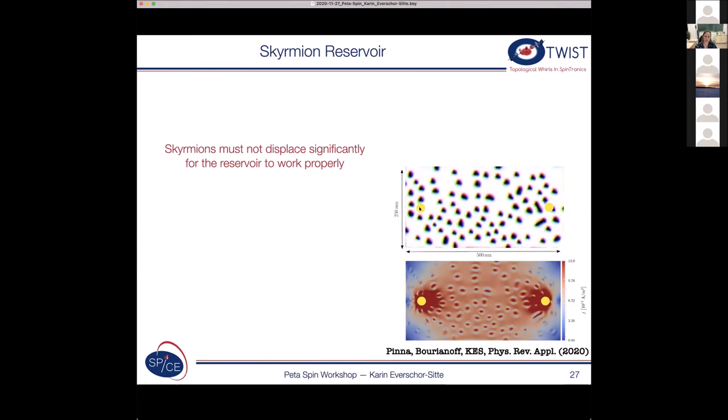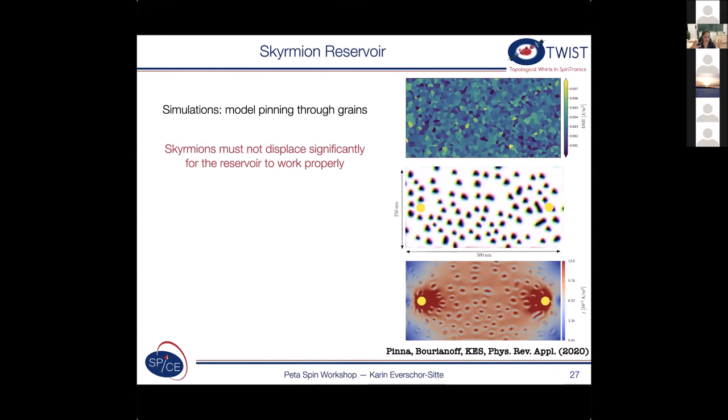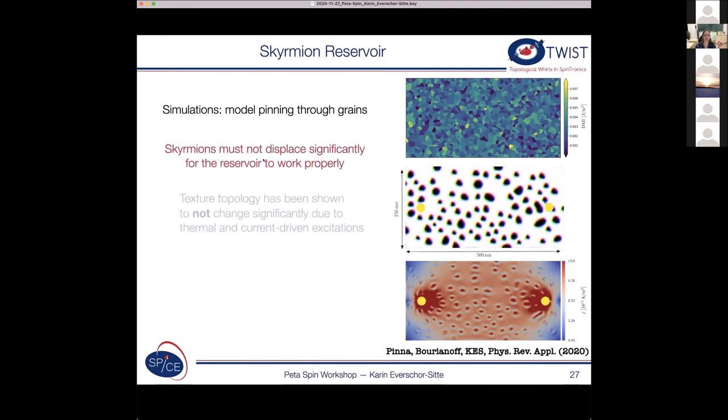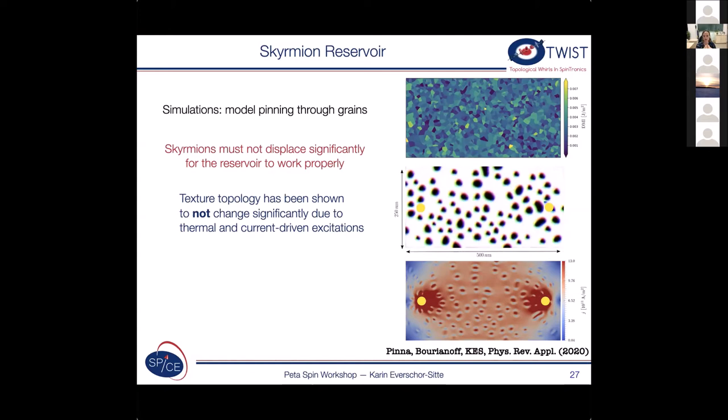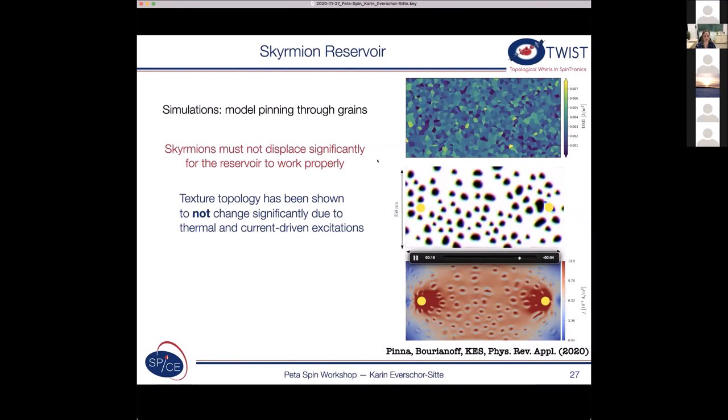And one thing we need to make sure that it's reproducible. So whenever we excite our skyrmions, first of all, they need to be pinned. Okay, so we pin them through grains, but the details don't matter. So you can also pin them by impurities and so on. But what we need to make sure is that these skyrmions don't just deform. They don't move. And that's what we tested. So we tested this under thermal excitations and also under current driven excitations. So they do deform. They wiggle around. So you might see this here, but they don't move fully. So because when we turn off the drive, it needs to be reproducible.